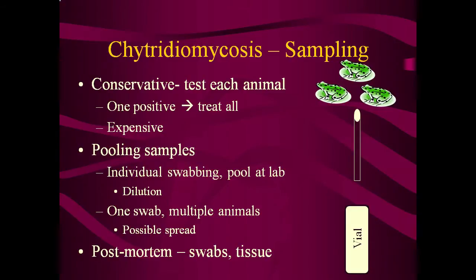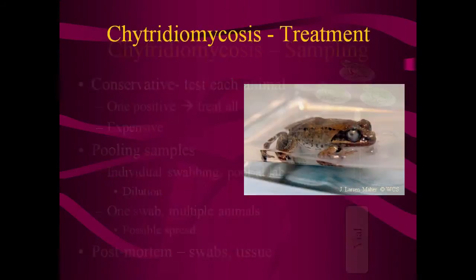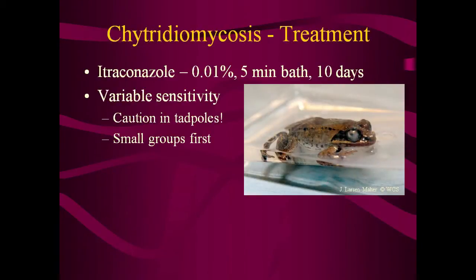Post-mortem sampling is performed in a similar manner. The entire ventrum of the animal can be swabbed. Alternatively, some labs may accept tissue samples for PCR. The most commonly used treatment is a 0.1% solution of itraconazole administered as a 5–10 minute bath once a day for 10 days.